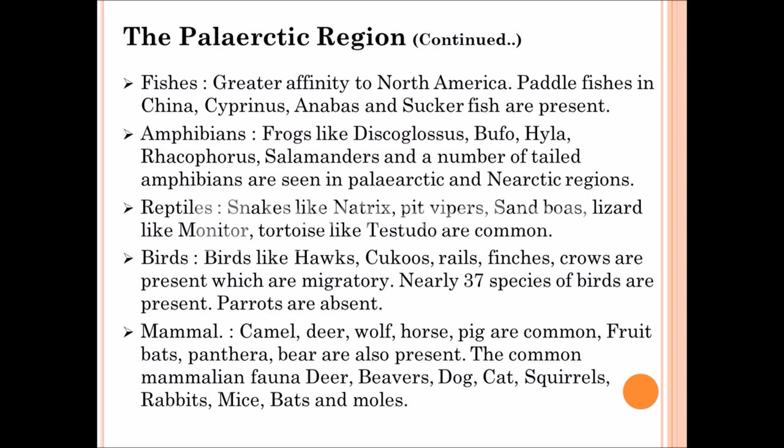In the Palearctic region, fishes like Paddlefishes, Cyprinus, Anabas, and Sacchar fishes are present. Amphibians like frogs, Bufo, Hyla, Rana, Rhacophorus, and salamanders are found. Reptiles like lizards and turtles are also present. In this region, 37 species of bird families are found, and parrot is absent. Commonly available birds are ground finches, hawks, and cuckoos. Mammals like camel, deer, wolf, horse, and pig are commonly found.